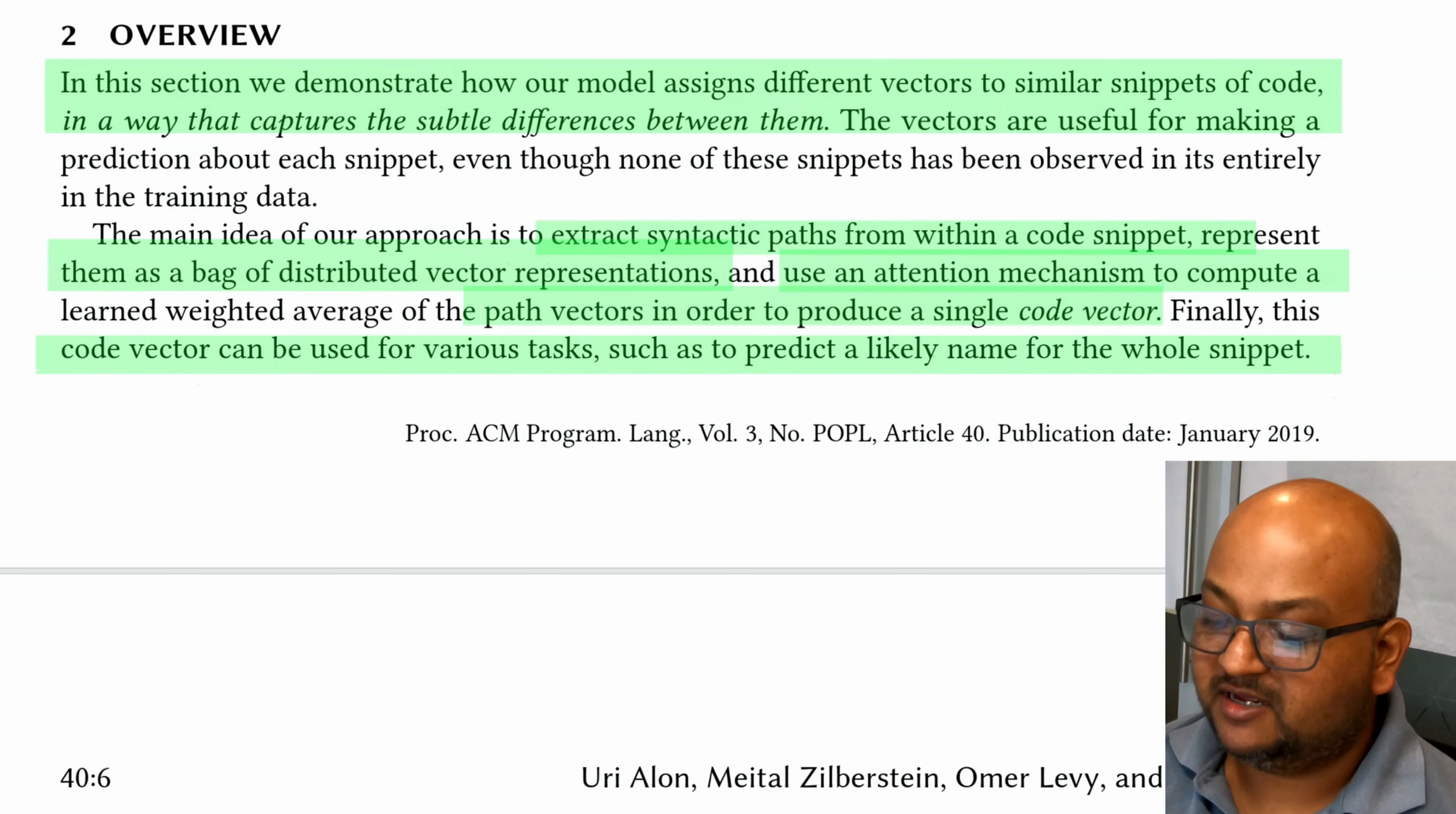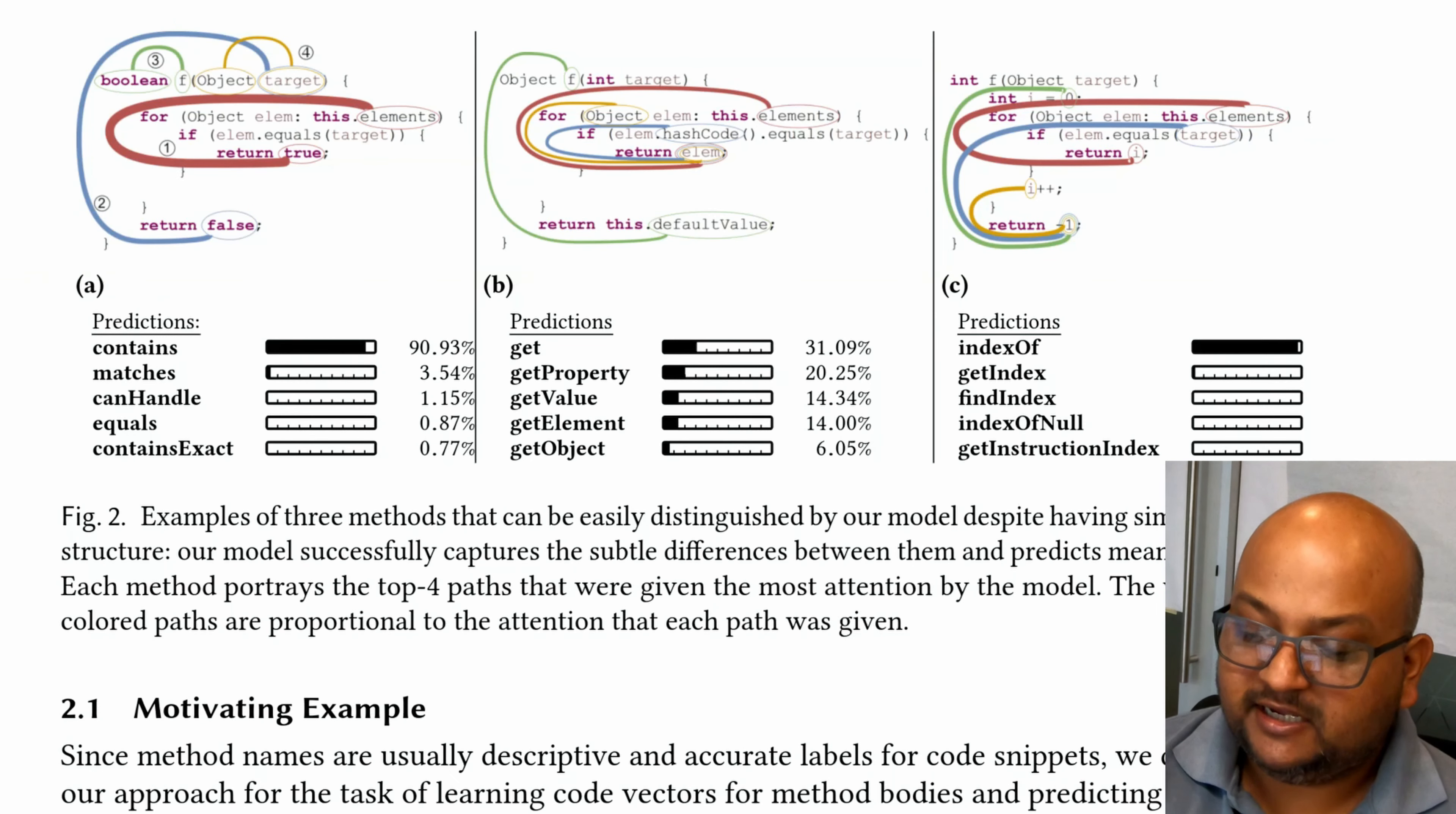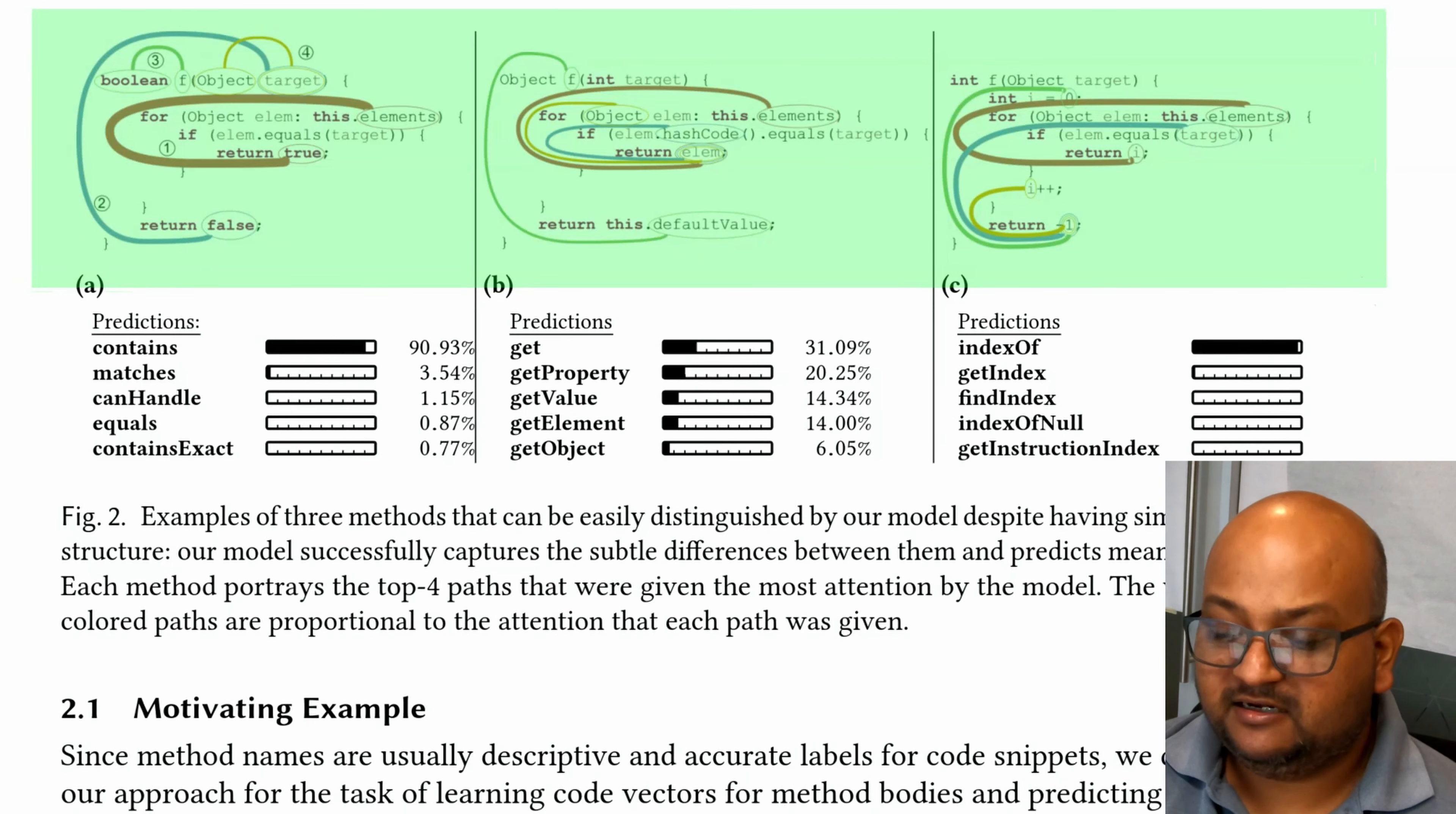The one they use in this paper is to predict a good name for this code snippet. Here we see three very similar code snippets that are subtly different. The first one checks if an element exists in an array. The second one actually returns the found element that you're looking for. And the third one returns the index of a found element. So these are all small variations on searching for a specific item within an array. And this technique is able to tell apart these small differences.